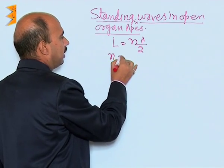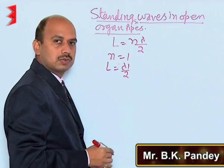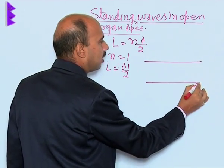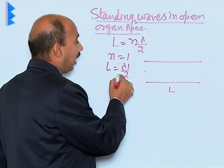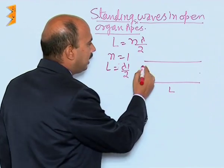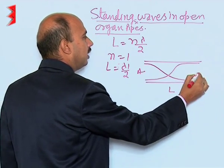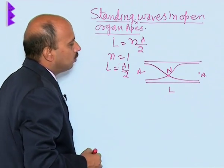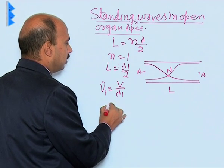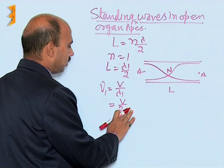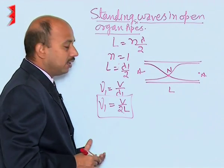For the first normal mode of vibration, taking n equal to 1, we can write L is equal to lambda 1 upon 2. In this case, this is an open organ pipe of length L, and at both ends there will be formation of anti-nodes, with this whole length equal to half of the wavelength. The wave has 2 anti-nodes and 1 node. The frequency nu is equal to v upon lambda 1, so nu is equal to v upon twice of L. This is the least frequency, called the fundamental frequency or the first harmonic.